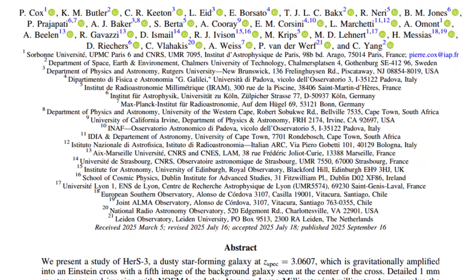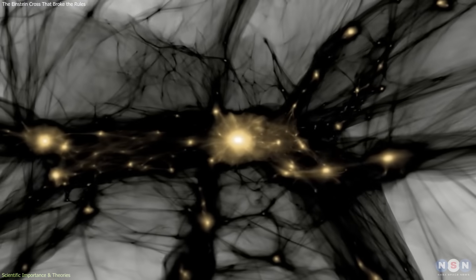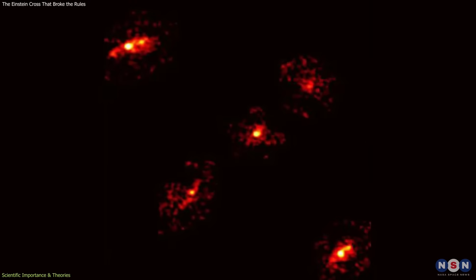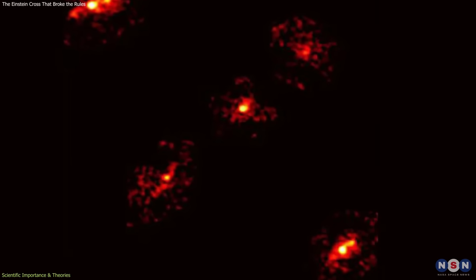The finding also feeds into larger scientific questions. Distribution of dark matter: Does it form smooth halos or are there dense clumps and cores? The fifth image suggests that concentrations of it can strongly affect lensing patterns.